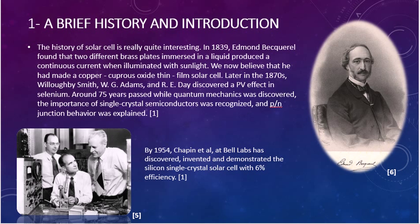Brief History and Introduction. The history of Solar Cell is really quite interesting. It starts in 1839 by Edmond Bacquerel, who found that two different brass plates immersed in liquid produce continuous current when illuminated with sunlight. We believe that he had made a copper oxide thin film solar cell. Later in the 1870s, Willoughby Smith and Adams discovered a photovoltaic effect in Selenium. Around 75 years later, quantum mechanics was discovered, the importance of single crystal semiconductors were recognized, and the PN junction behavior was explained.